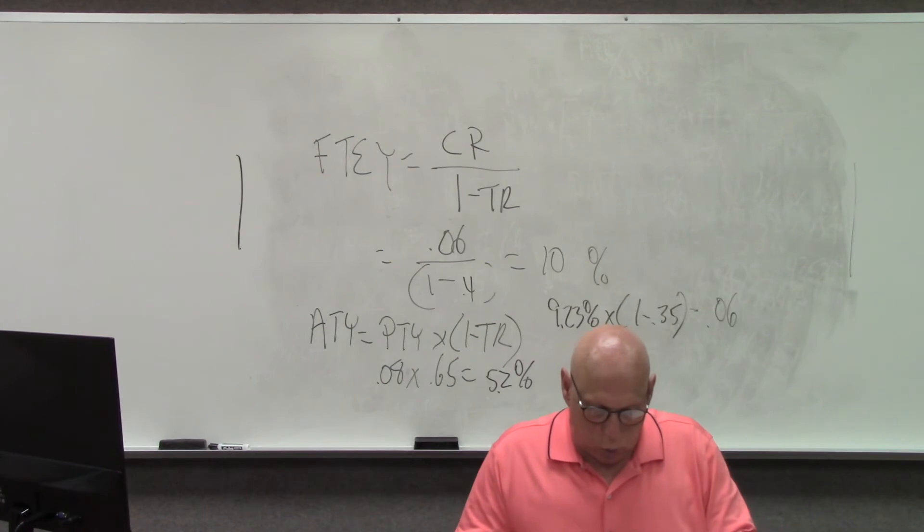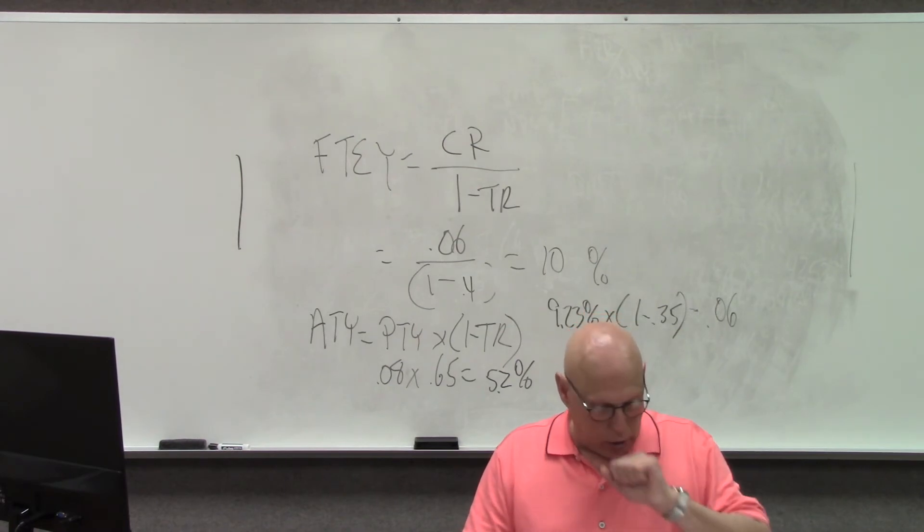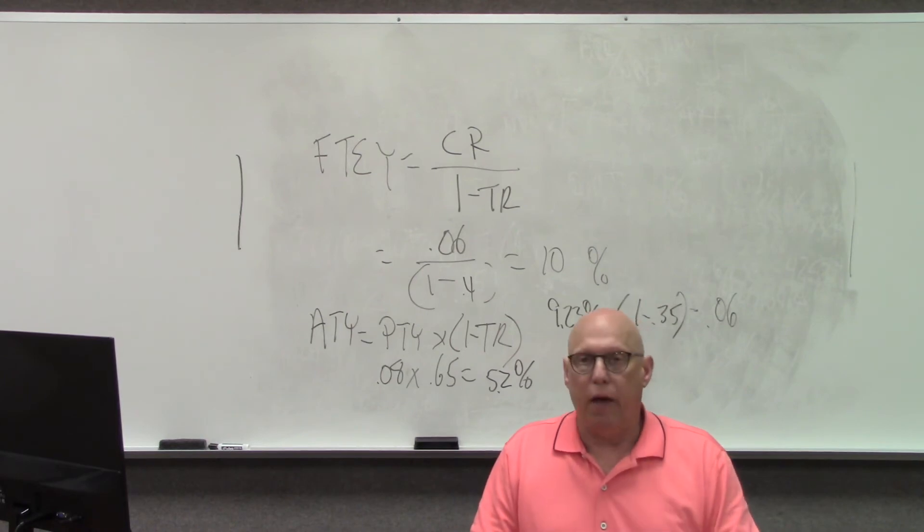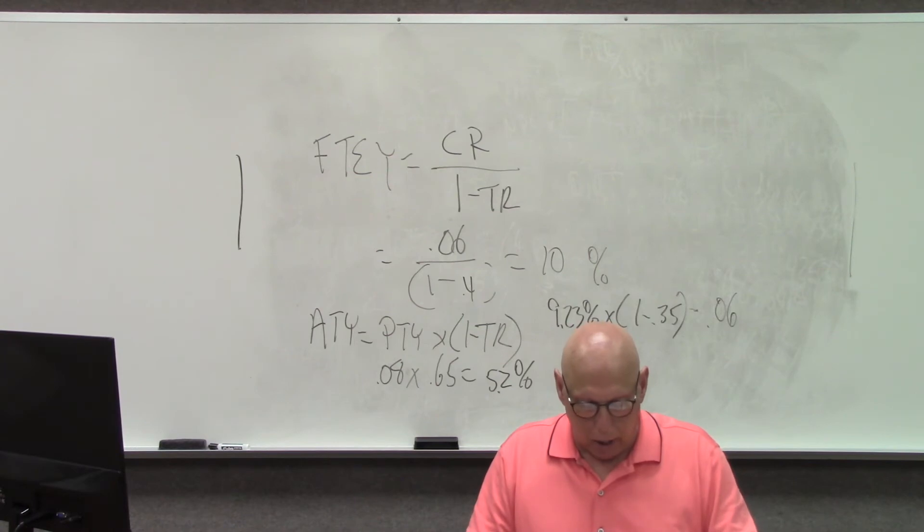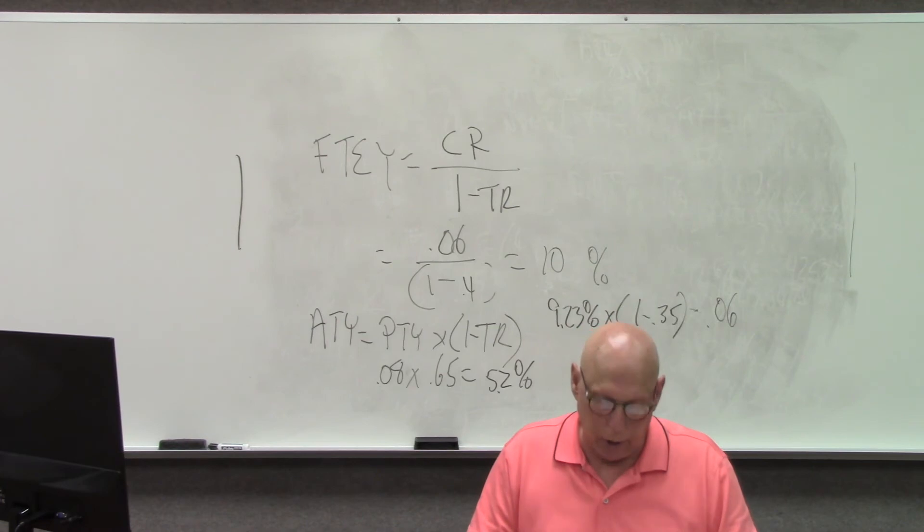What concept determines which bondholder gets paid first in the event the issuer goes bankrupt? And the concept is called seniority. What are the similarities and differences between a sinking fund and a call feature? So, similarities. The similarity is that with a sinking fund and with a call feature, bonds are repurchased prior to when they mature. And remember, maturity is when the principal is paid back.